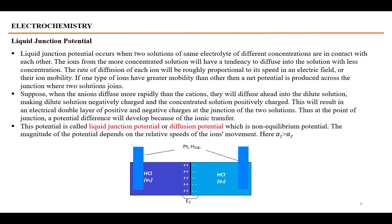When we talk about concentration cells, a cell is shown with two different concentrations. On the left-hand side, the activity of HCl is A1, which is greater than that of the right-hand side cell where the activity of HCl is A2. Whenever we talk about this type of cell, a liquid junction potential arises at the junction of two liquids or two solutions. It is due to the difference in movement of positively and negatively charged ions.